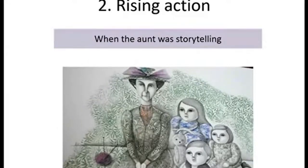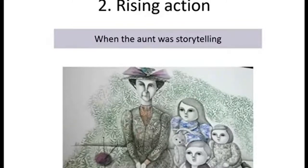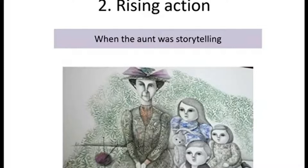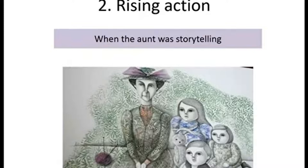The girl was finally saved from a mad bull by rescuers who admired her moral character. 'Wouldn't they have saved her if she hadn't been good?' asked the bigger of the small girls — exactly the question the bachelor had wanted to ask. 'Well yes,' admitted the aunt lamely, 'but I don't think they could have run quite so fast to her help if they hadn't liked her so much.' 'It's the stupidest story I have ever heard,' said the bigger girl with immense conviction. 'You don't seem to be a success as a storyteller,' said the bachelor suddenly from his corner.